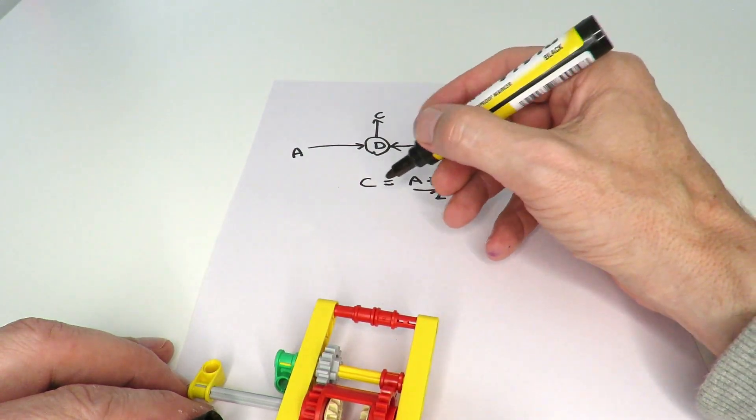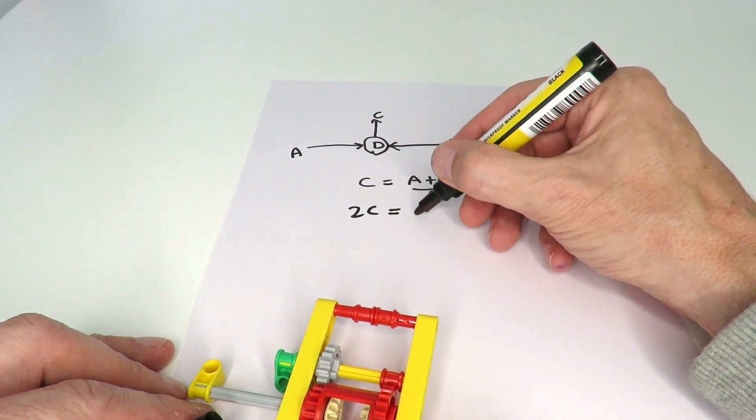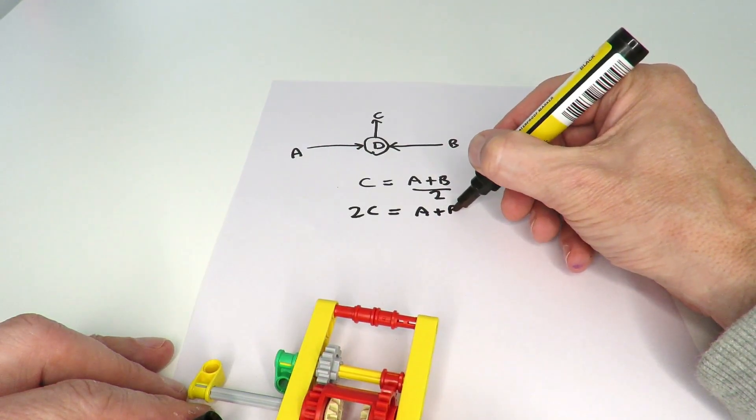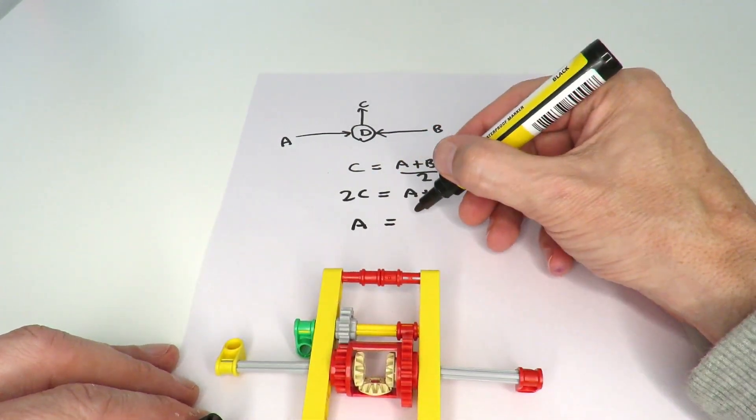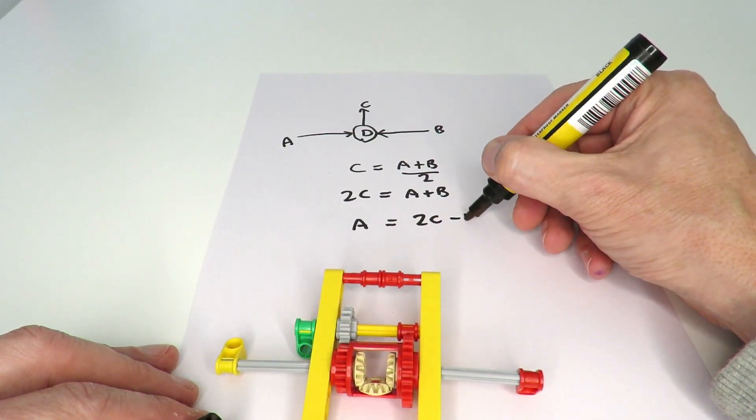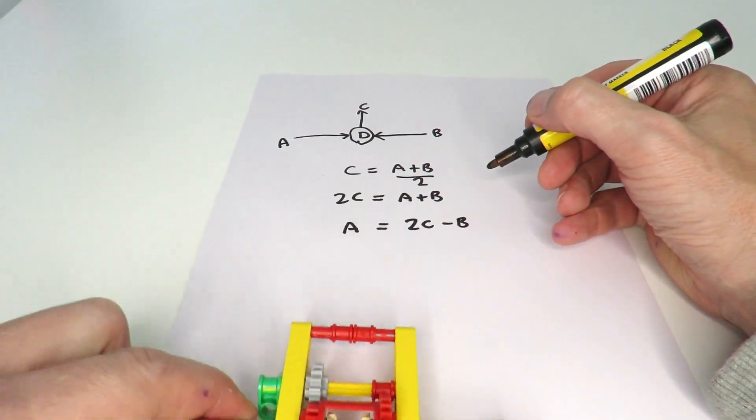By rearranging this equation, we can write, by cross-multiplying the two, we can write 2C equals A plus B. And then we can write that, for example, A is equal to 2C minus B. Now, the great thing about this equation, it allows us to create different gear ratios.